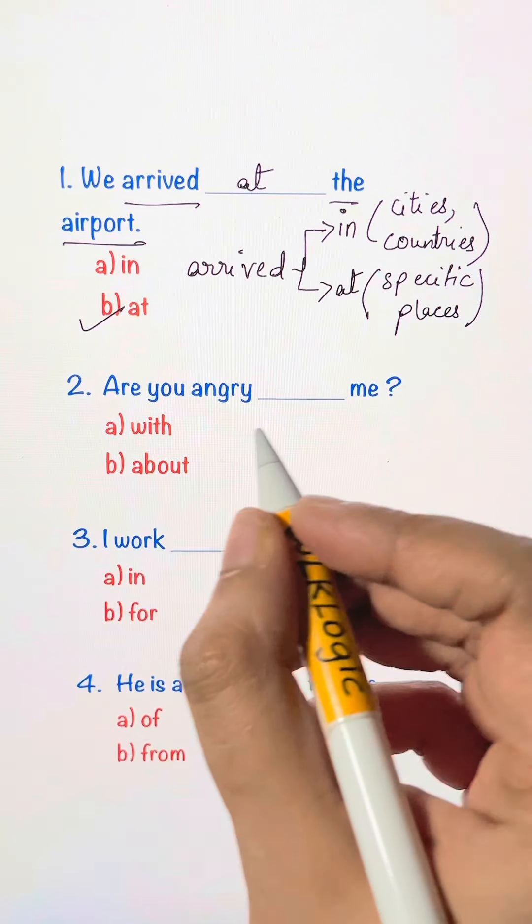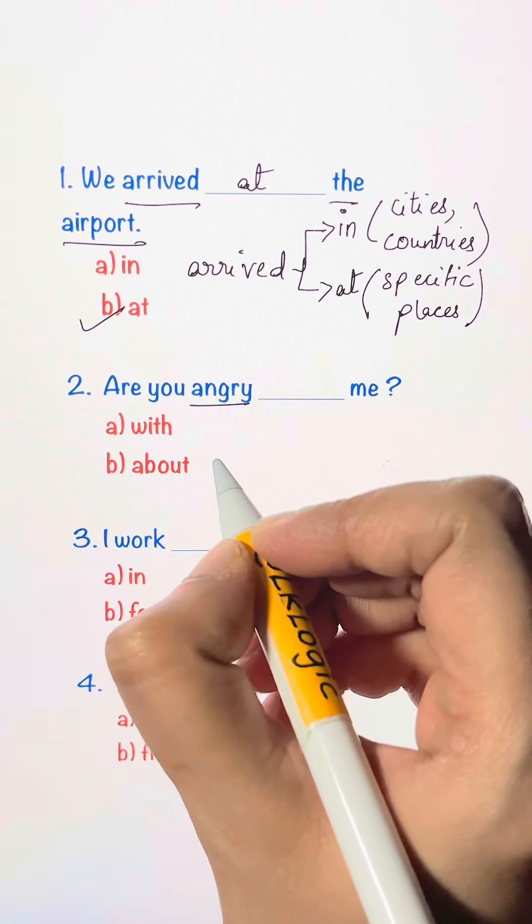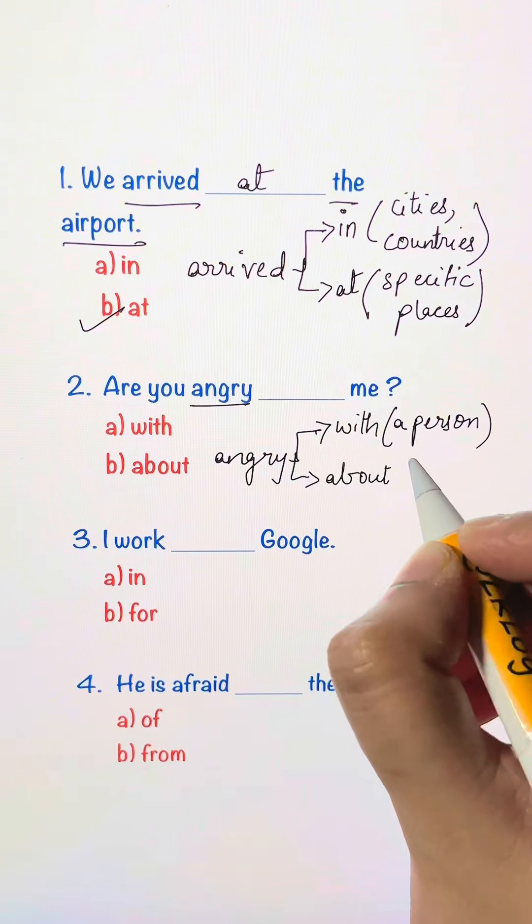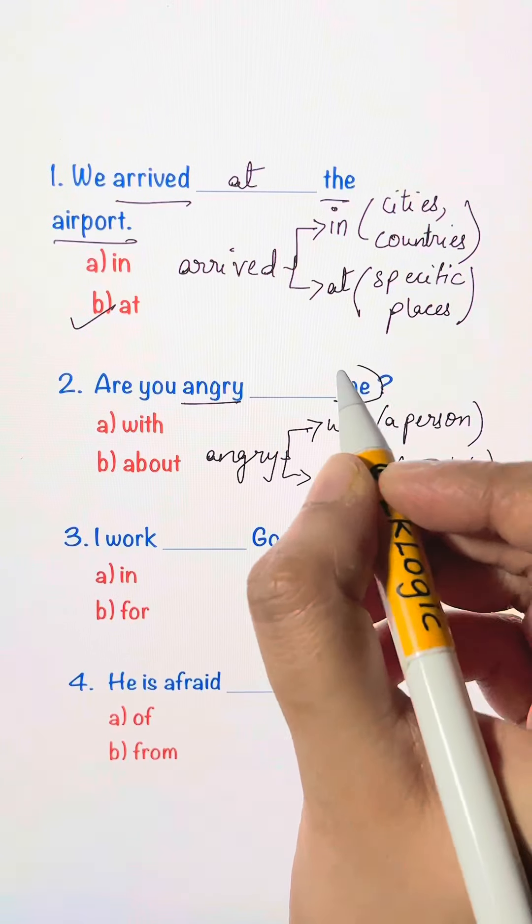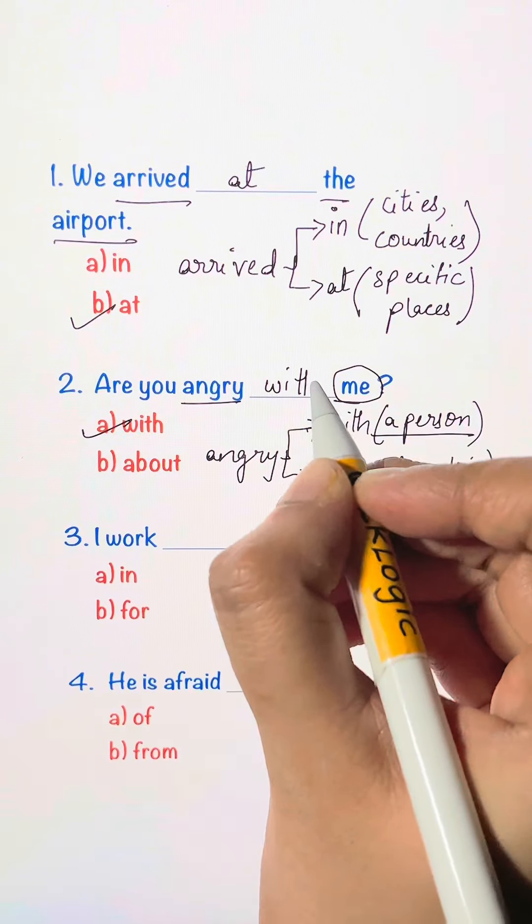Are you angry blank me, with me or about me. So the keyword here is angry. We say angry with a person. We say angry about something. So here we have a person. That's me. So we use with. Are you angry with me?